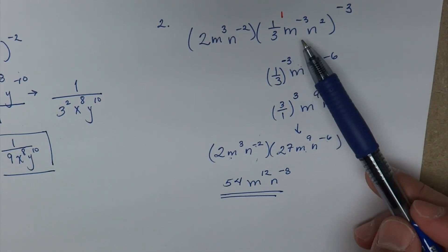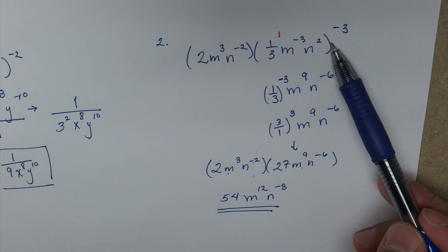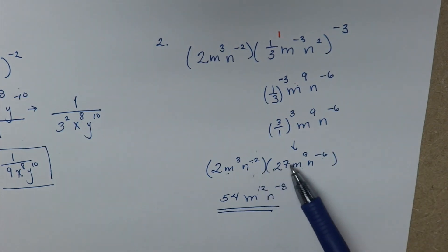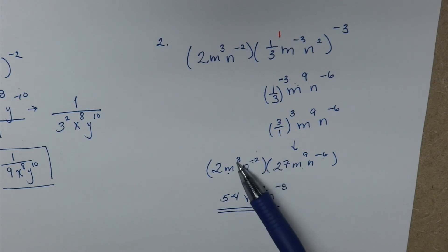So I want you to notice the difference when we have one base, we multiply the exponents. But now when we have 2 bases, what do we do? We add the exponents. And hopefully that helps guys.